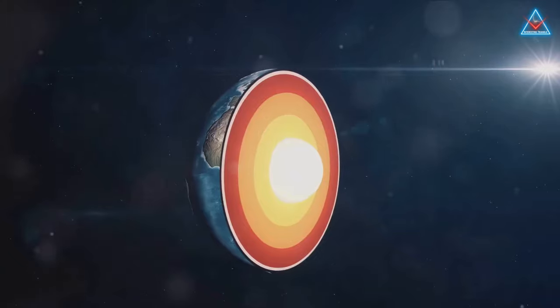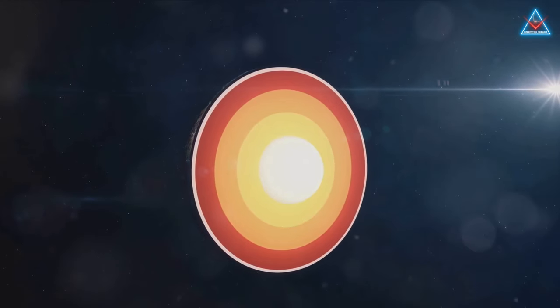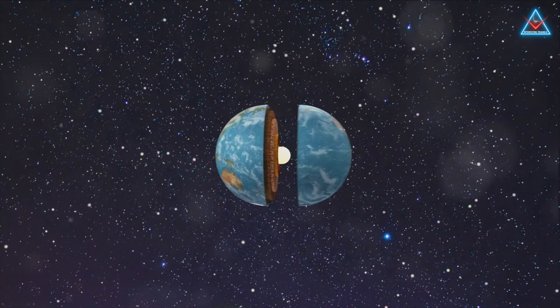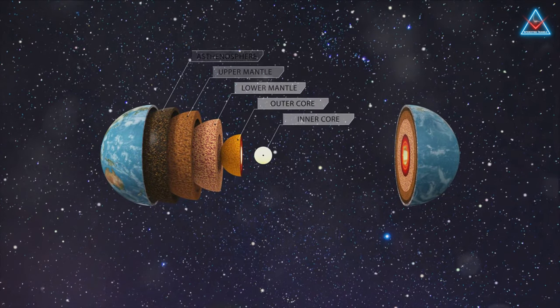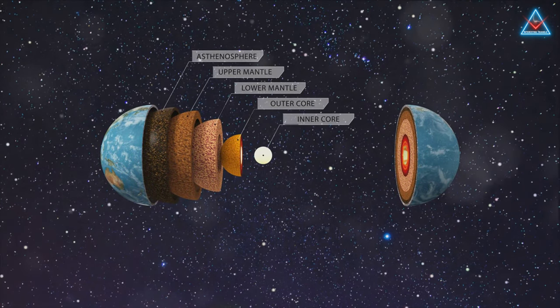our planet's core. The molten iron within the outer core, swirling and churning, generates this magnetic field, acting as our planet's first line of defense against the sun's potent rays.